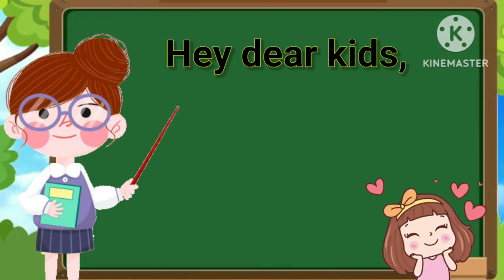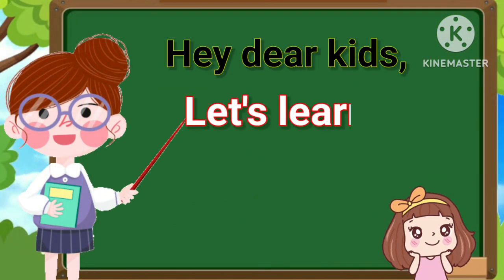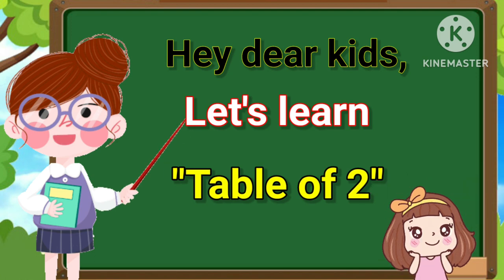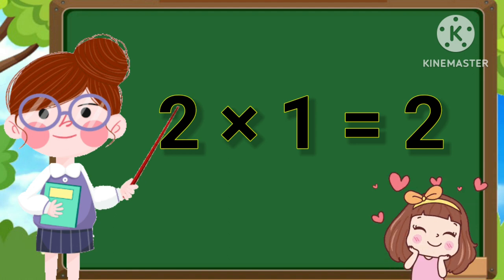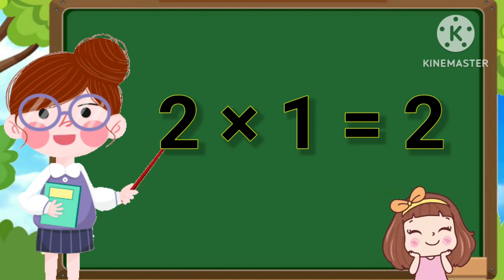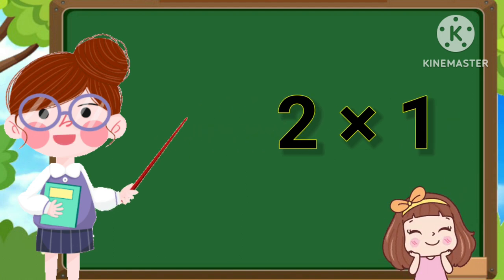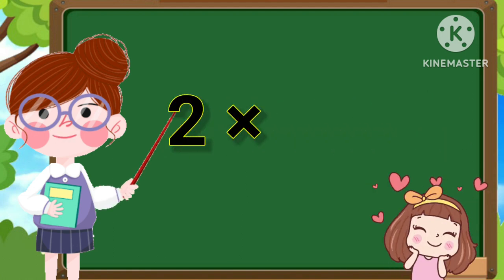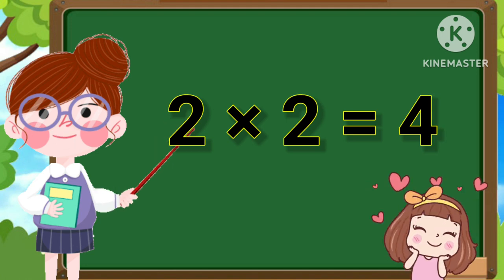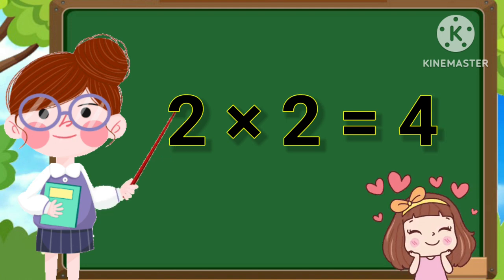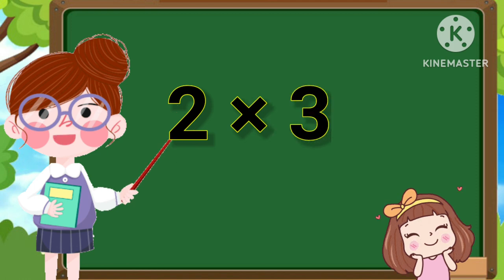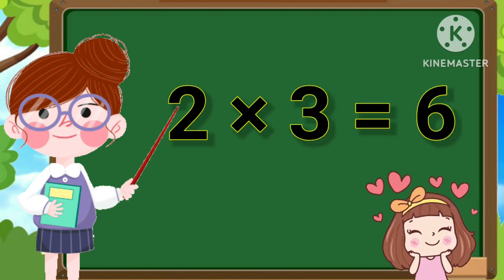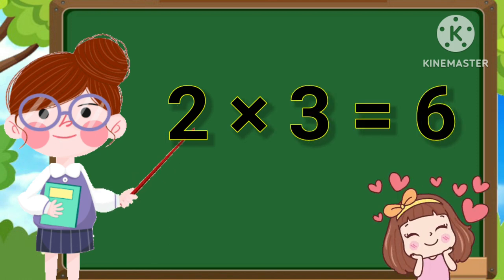Hey, Dear Kids! Let's Learn Table of Two. 2 1s are 2, 2 2s are 4, 2 3s are 6.